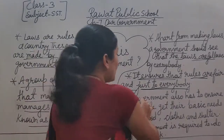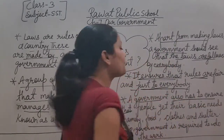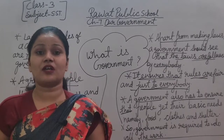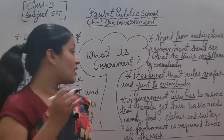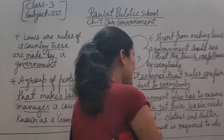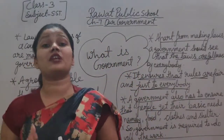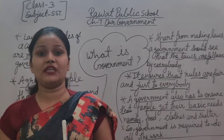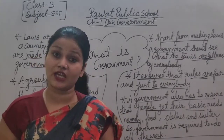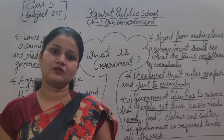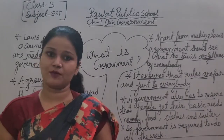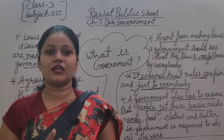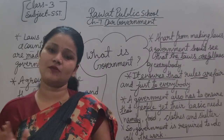The government also has to ensure that people get their basic needs. Government यह निश्चित करती है कि लोगों को उनकी basic needs मिल रही हैं या नहीं — जो daily life जीने के लिए चाहिए। For example, food — खाना — सभी को मिलना चाहिए, और यह भी government सुनिश्चित करती है कि food सभी को मिल रहा है या नहीं।